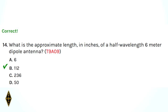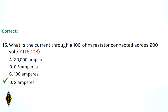Question 14: what is the approximate length in inches of a half-wavelength six-meter dipole antenna? For six meters, a full wavelength is six meters — think of a meter as about a yard. A half-wavelength is three meters, or approximately three yards. Three times 36 gets you to about 112 inches — so 14B. Question 15: what is the current through a 100-ohm resistor connected across 200 volts? Using E = IR, current equals voltage divided by resistance: 200 divided by 100 equals 2 amperes.